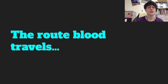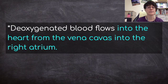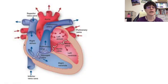Let's trace the route that blood travels through the heart. Deoxygenated blood — that means blood that has had the oxygen removed from it by the cells in the body — flows into the heart from the vena cavas into the right atrium. In the diagram, we have the superior vena cava and the inferior vena cava going into the right atrium. There are two vena cavas because the superior vena cava comes down from the brain and the upper body, and the inferior vena cava comes from the lower body.